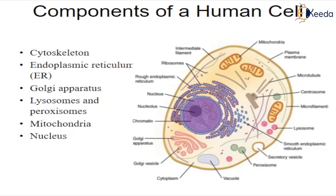Endoplasmic reticulum, ER. There are two types of ER: rough ER and smooth ER. These organelles help process molecules created by the cell and transport these molecules to their specific destination, either inside or outside the cell. Rough ER is covered with ribosomes that give it a rough appearance and transports material through the cell. Smooth ER also transports material through the cell but contains enzymes which produce and digest lipids and membrane proteins. It detoxifies drugs and poisons present in the liver.